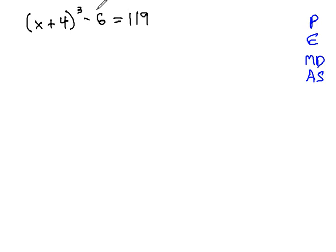In other words, this minus 6 in x plus 4 cubed minus 6 equals 119, the minus 6 must be taken care of first before we worry about the exponent.